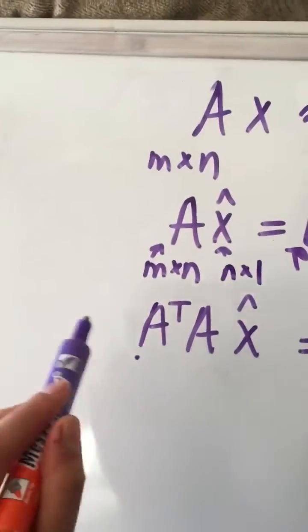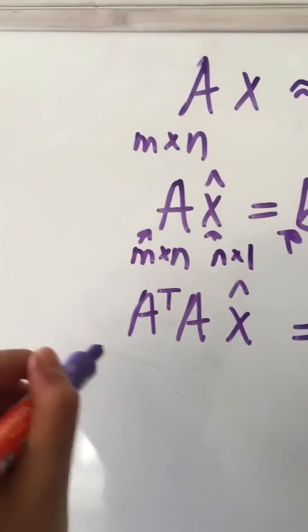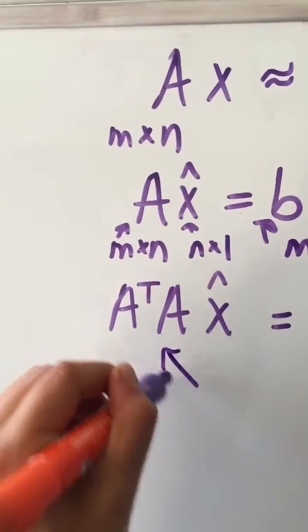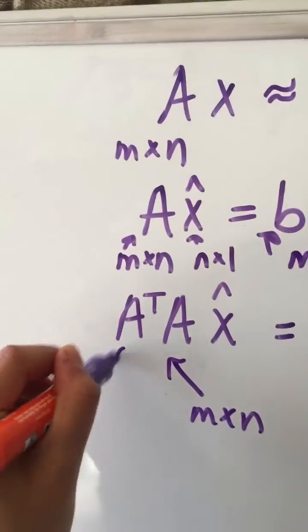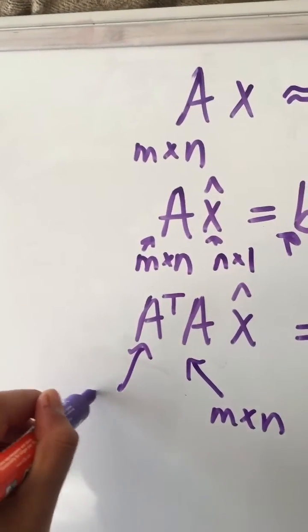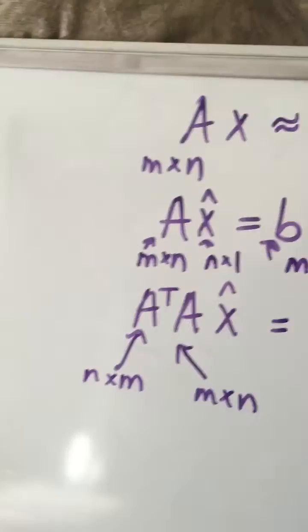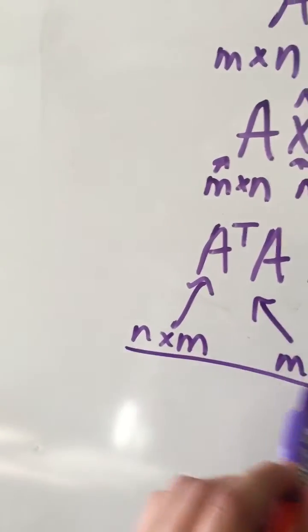Notice how now we have where this is an m by n, this is going to be n by m, and we have constructed a square matrix.